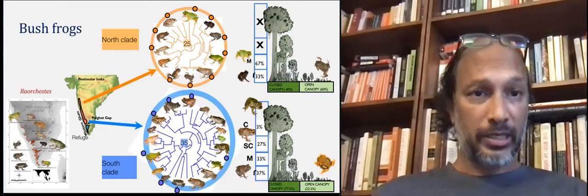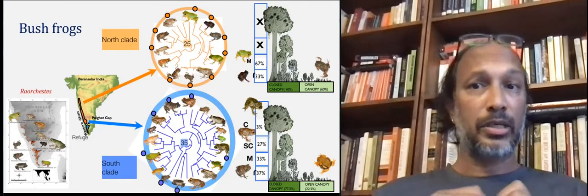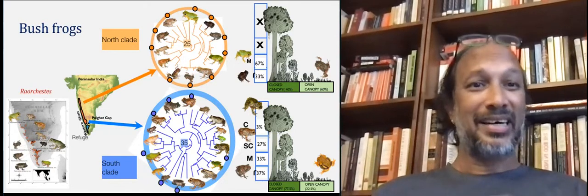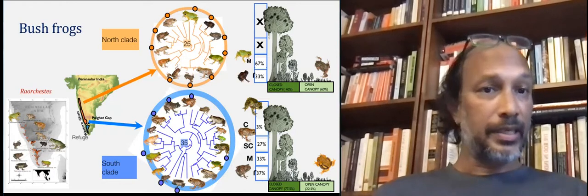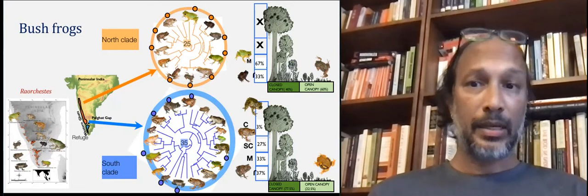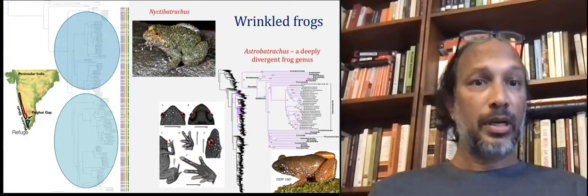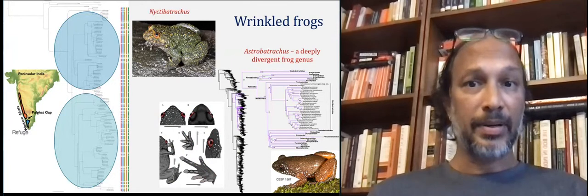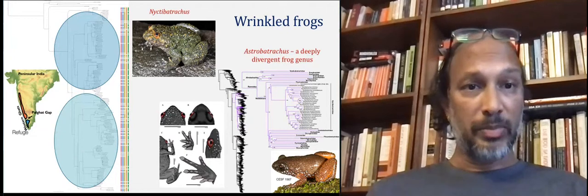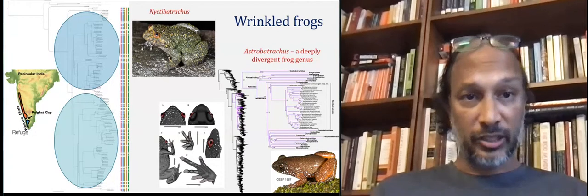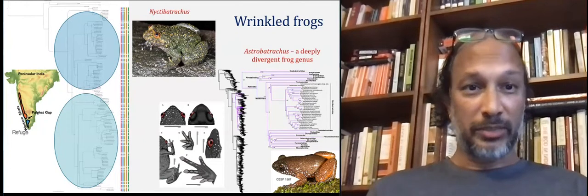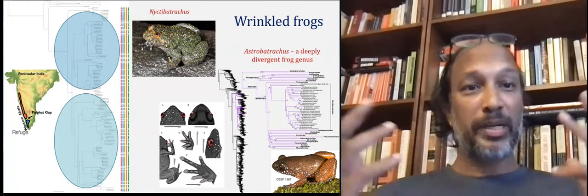One of my students worked on bush frogs and not only discovered nine new species, but also found that the southern and northern clades on either side of the Palghat Gap form very distinct evolutionary clades and also have different adaptive signatures — with more grassland-adapted frogs in the northern clade and more canopy-adapted bush frogs in the southern clade. Another student's work on wrinkled frogs showed similar patterns with two clades on either side of the Palghat Gap, but our continuing work also revealed a sister lineage so deeply divergent that we treated it as a sister genus called Astrobatrachus. Notably, Nyctibatrachus has over 40 species and Astrobatrachus has just one, even though both have been evolving for tens of millions of years.